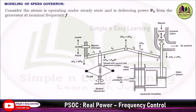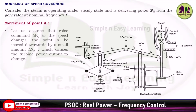Consider the steam operating under steady state, delivering power Pg from the generator at nominal frequency. There is a linkage mechanism A, B, C, D, and E. First, let us see the movement of point A. Assume a raise command del_Pc to the speed changer, so point A moves downwards by a small amount del_Xa, and this will cause the turbine power output to change.